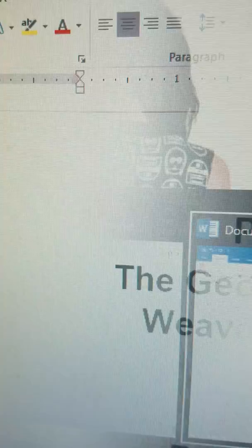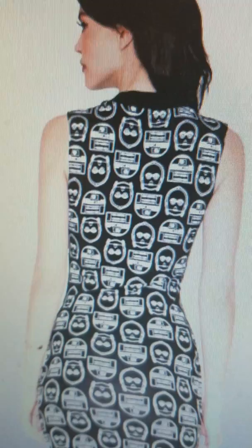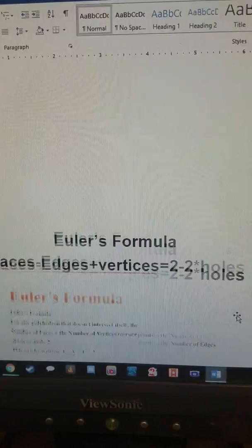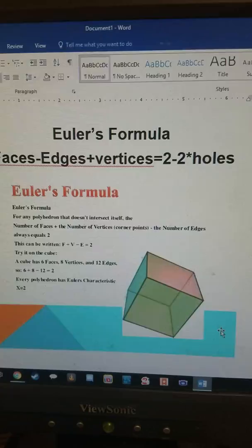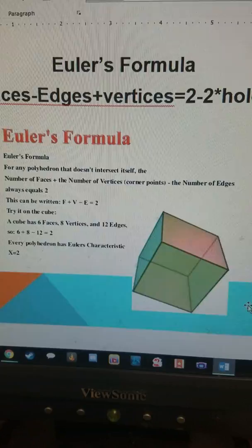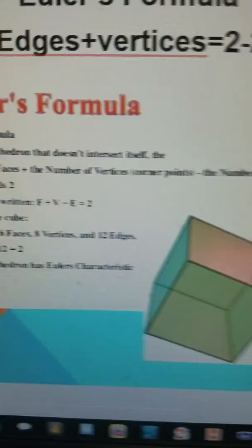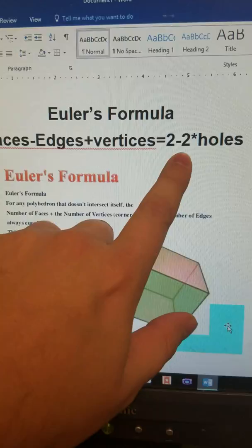So one of the things we learned in Dr. Matsumoto's presentation was Euler's formula. Where you have the faces minus the edges plus the vertices equals two minus two times the number of holes in the shape. So for a simple cube where there are no holes, you know that it will always equal two because zero holes times two is zero, making equal two.